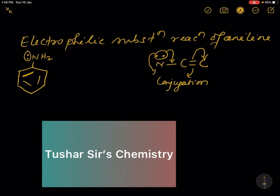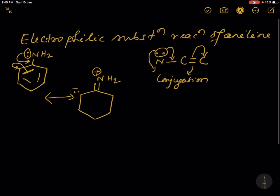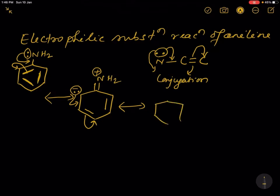If a lone pair is in conjugation with a pi bond or double bond, then resonance occurs. In this case the next resonance structure can be drawn: this lone pair will form a double bond and the existing pi bond will be shifted to the next ortho position. Between N and carbon a double bond will be formed, and N carries a positive charge, with negative charge developed on the ortho position. Then we can draw the next resonance structure — this negative charge will form a double bond and the existing pi bond will be shifted.